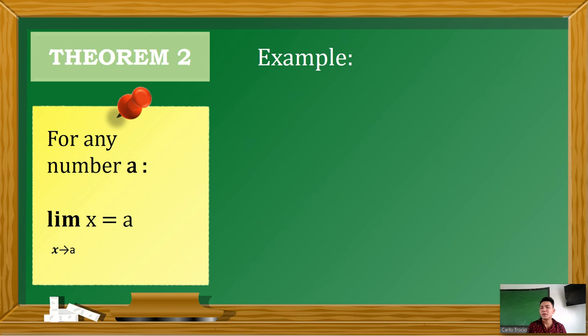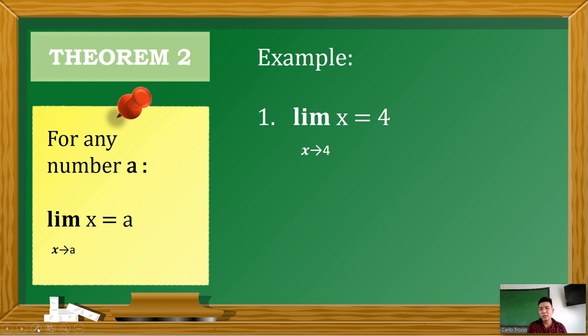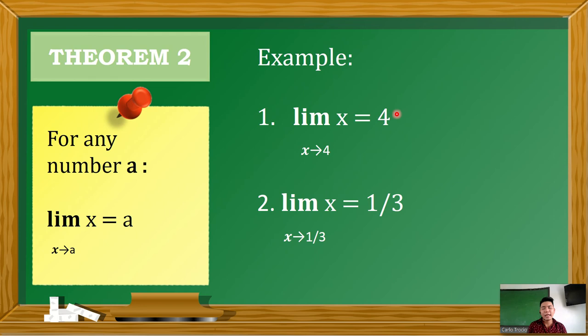Theorem 2: for any number a, the limit of x as x approaches a is equal to a. So if you have a function of only x, then the value of a will be the limit, because x alone does not have any other co-terms. For example, the limit of x as x approaches 4 is equal to 4 — you simply transfer the 4 as the answer. Another example: the limit of x as x approaches 1/3 is equal to 1/3. The value of a becomes the limit.